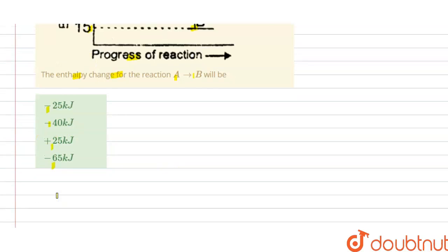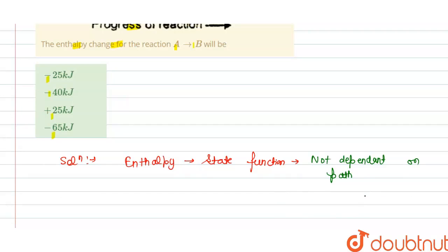The solution of this question is: We know that enthalpy is a state function, and we know that a state function is not dependent on path. It only depends on initial and final position.